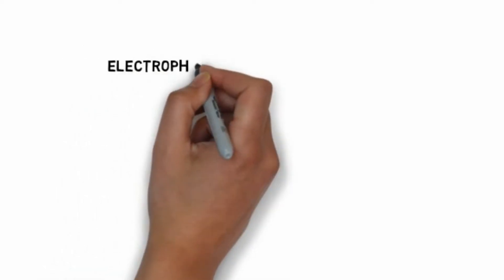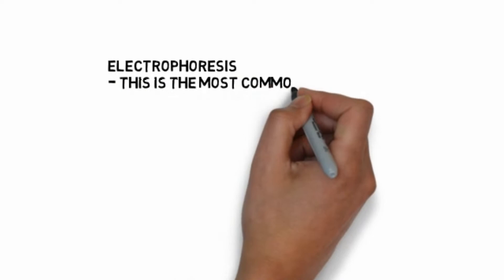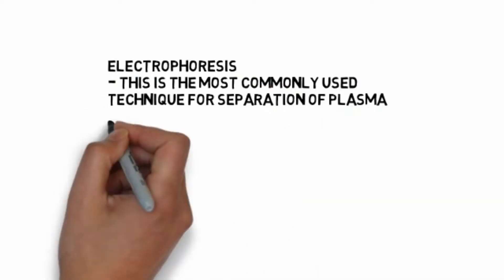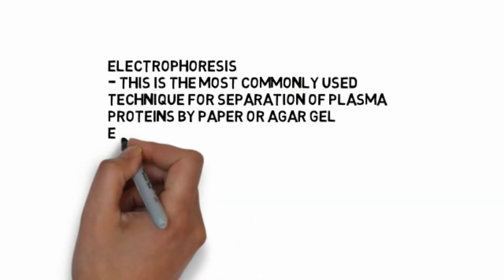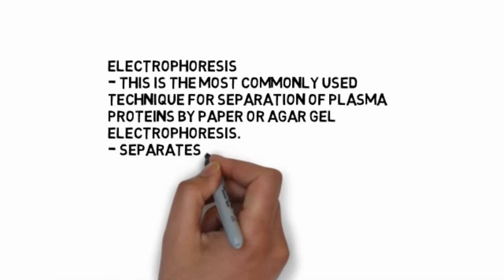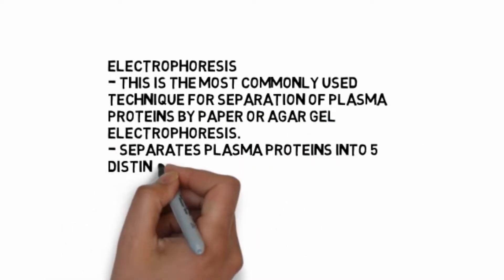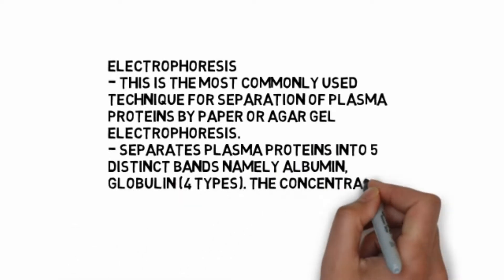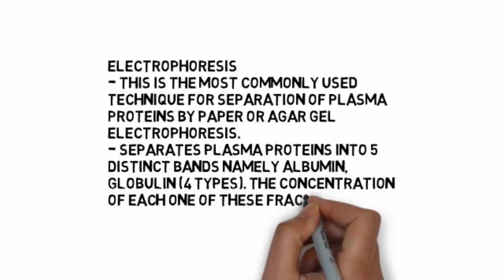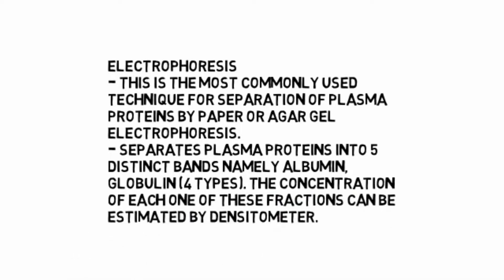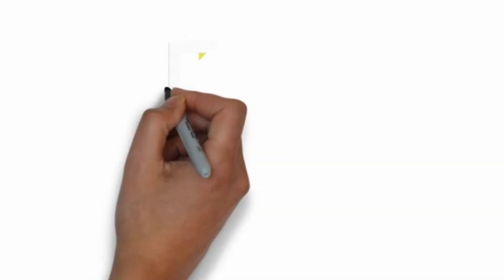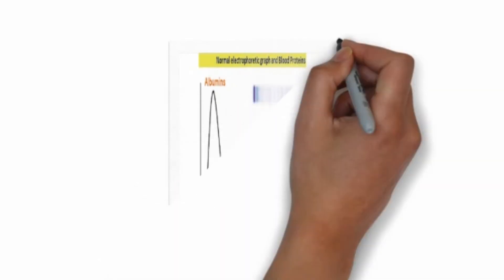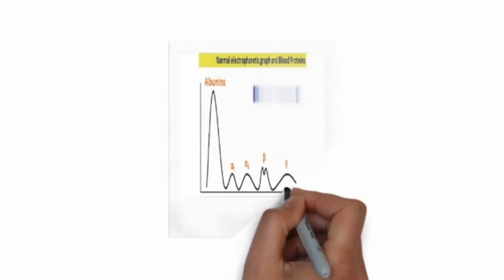Electrophoresis is the most commonly used technique for separation of plasma proteins by paper or agar gel. It separates plasma proteins into five distinct bands: albumin, alpha-1 globulin, alpha-2 globulin, beta globulin, and gamma globulin. The concentration of each fraction can be estimated by a densitometer.